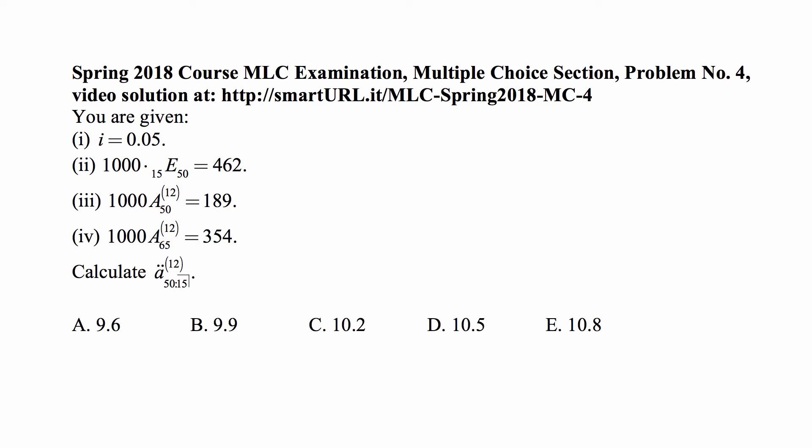Calculate A double dot 50 colon angle 15 upper 12, which is an annuity due, payable as long as the 50-year-old is alive over the next 15 years, but payable unit annuity. The unit is spread over the year in the payments of 1/12 at the beginning of each month.